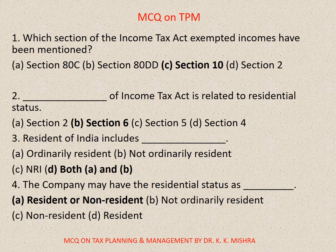Question number 4: The company may have residential status as — A. Resident or non-resident, B. Not ordinarily resident, C. Non-resident, D. Resident. The correct option is A. Resident or non-resident.